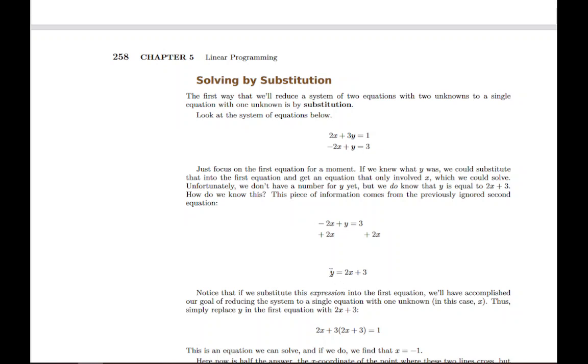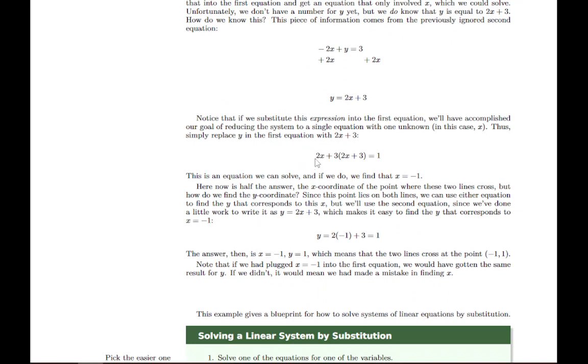Then we have that second equation rewritten in the form y equals 2x plus 3. And that means that we can replace y with 2x plus 3 any time we want. Now if we replace y with 2x plus 3 in the second equation, it's not terribly helpful because it just gives us the same information back. But where this gets useful is if we take that to the first equation and replace y with 2x plus 3 in the first equation. That gives us an equation with only one variable, which we know how to solve.